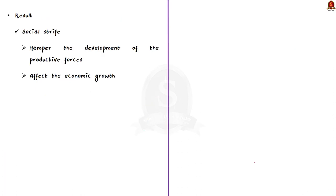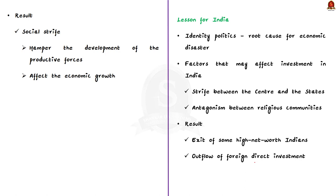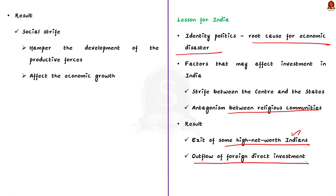This is the first and foremost lesson for India from Sri Lanka. Sri Lanka's crisis may seem economic on the surface, but it came from social strife driven by majoritarian identity politics. Identity politics between social groups is the root cause of economic disaster. Even in India, strife between the center and states, and antagonism between religious communities, negatively impacts investment — seen in the exit of high net worth Indians and outflow of foreign debt investment. India must move away from identity politics and work towards social integration to achieve economic growth.